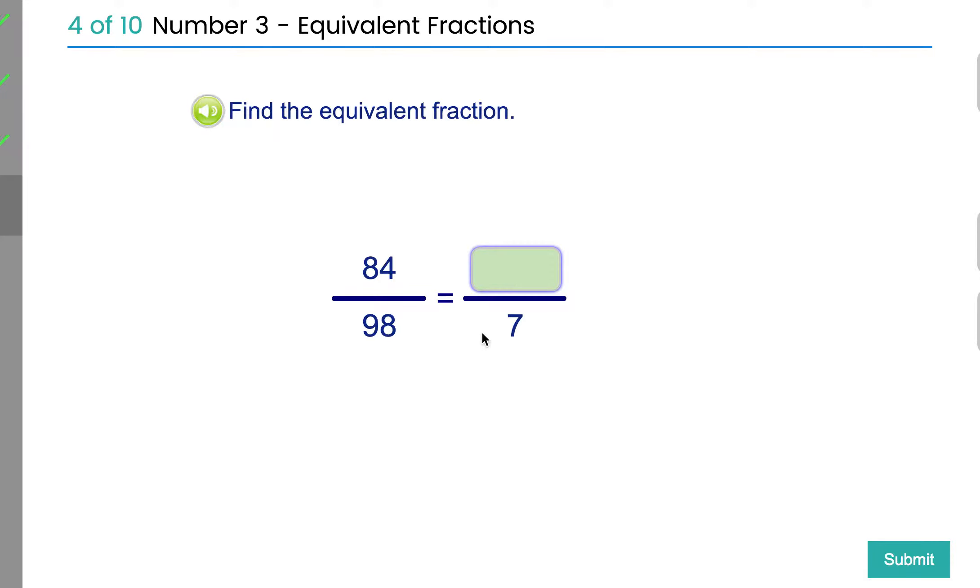And one more. 98 to 7. 98 has been turned into 7. And you have to think to yourself, how many 7s are there in 98? Or 7 what's make 98. So you might not know your 7 times table up to 98, but you probably know your 7 times table up to 70. And then you can just go from there.